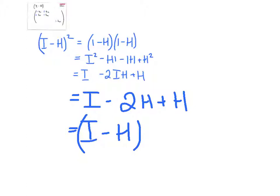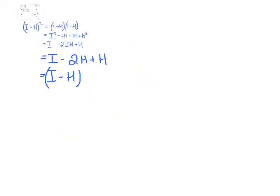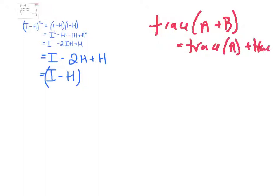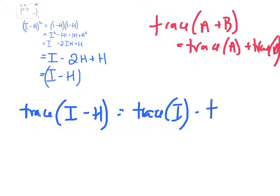And the one other thing that comes in useful is just to know the trace of this. And we can just use the result that trace of A plus B is equal to trace A plus trace B. So what I need to do to find the trace of I minus H is to find the trace of I and subtract the trace of H. Well, we've seen already that the trace of the hat matrix is p.